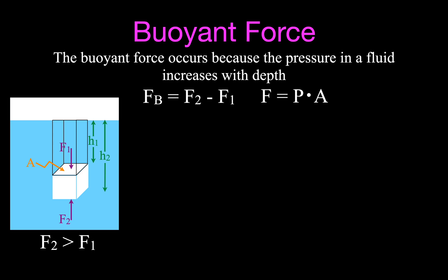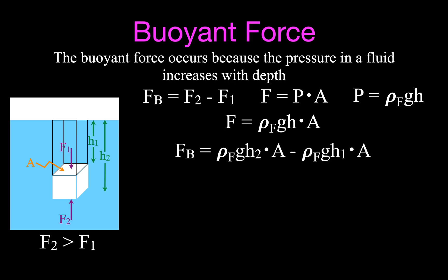From the pressure equation — pressure equals force per unit area — we can rearrange to get force equals pressure times area. The pressure at a depth in a liquid is given by: pressure equals the density of the fluid times g times height, where height is the distance below the surface. Substituting this in, the force equals the density of the fluid times g times h times the area. Substituting into F2 and F1, the buoyant force equals density of fluid times g times h2 times area, minus density of fluid times g times h1 times area.